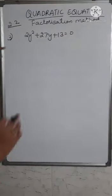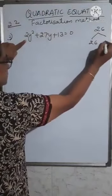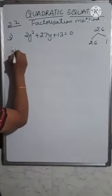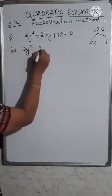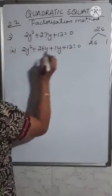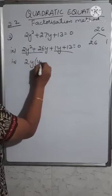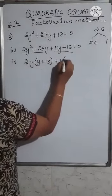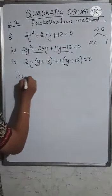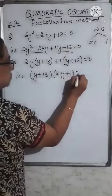Third problem: 2y² + 27y + 13 = 0. Taking the product of the first and last coefficients gives 26. The factors of 26 are 26 and 1, and 26 + 1 = 27, giving the middle term. So the expression is rewritten as 2y² + 26y + y + 13 = 0. Grouping gives 2y(y + 13) + 1(y + 13) = 0.